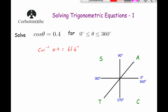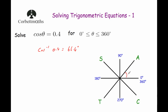We're going to put that on the CAST Diagram in all four quadrants. So putting in your lines like so, and we'll mark in our 66.4° in each quadrant. Each of these angles represents either 0.4 or negative 0.4 depending on which quadrant you're in. Starting from zero, we want to find where cos of this angle gives a positive answer.